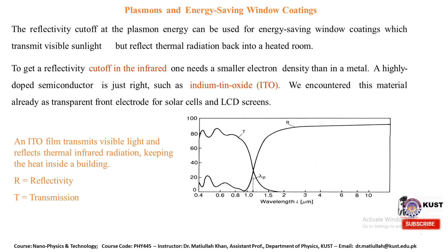The reflectivity cutoff at the plasma energy can be used for energy-saving window coatings, which transmit visible sunlight but reflect thermal radiation back into a heated room. To get a reflectivity cutoff in the infrared region, one needs a smaller electron density than in a metal. A highly doped semiconductor such as indium tin oxide is just right. This material is already used as a transparent front electrode for solar cells and LCD screens. Indium tin oxide transmits visible light and reflects thermal infrared radiation, which is why it is used for energy saving.